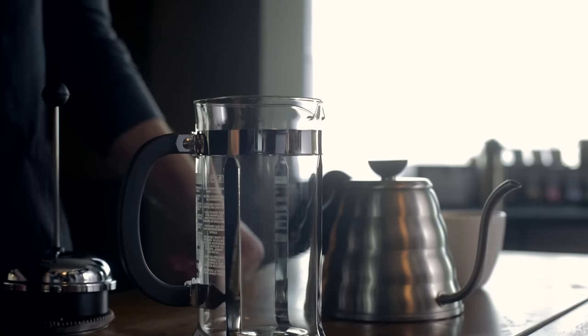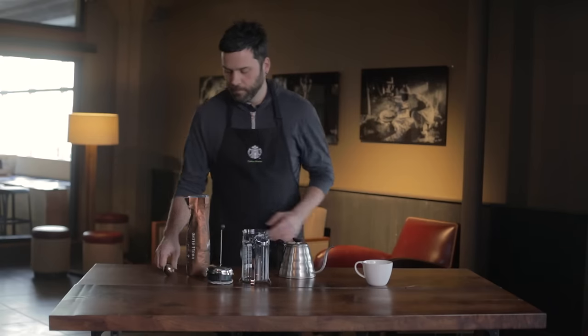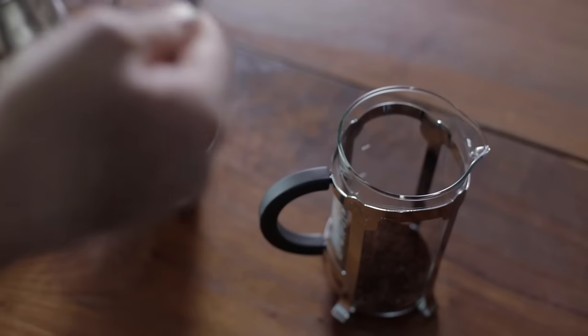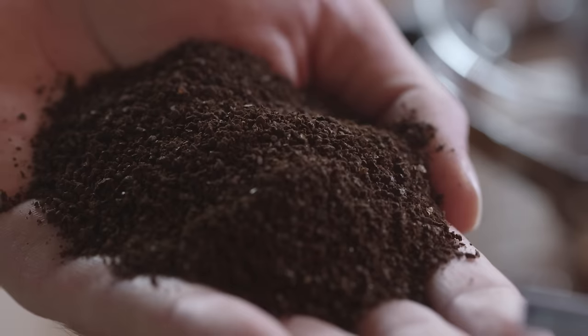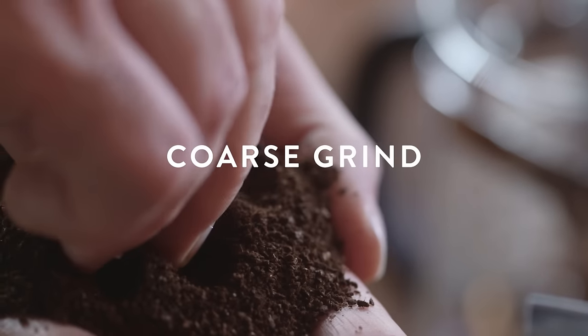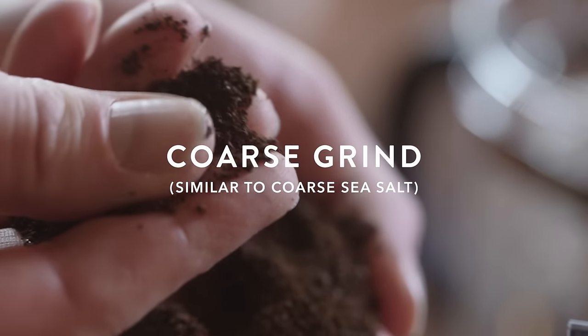Making a French press is actually pretty easy. So you start with your clean press, add the coffee grinds which should be ground really coarse, very similar to a coarse sea salt.